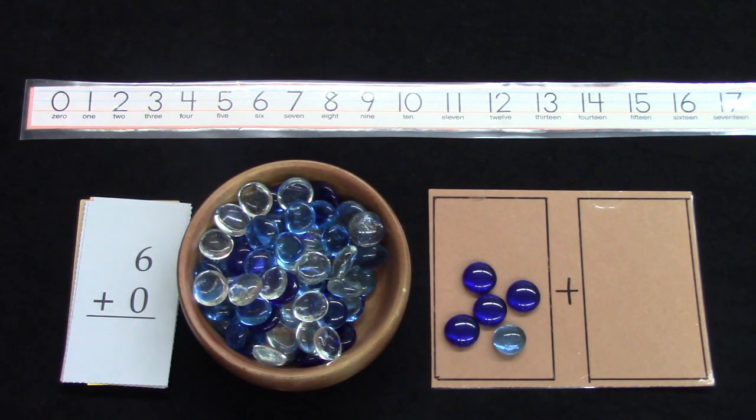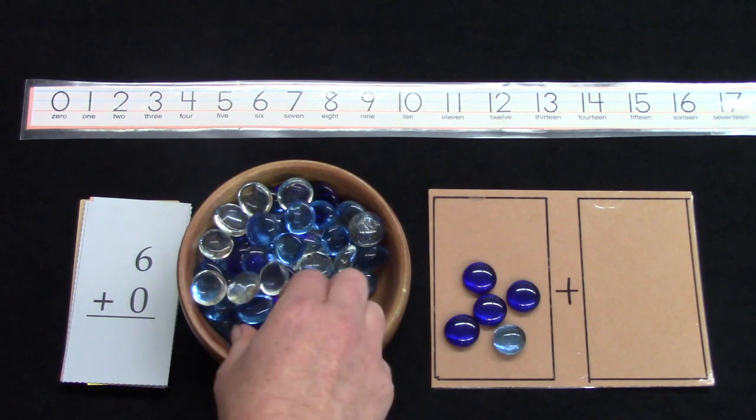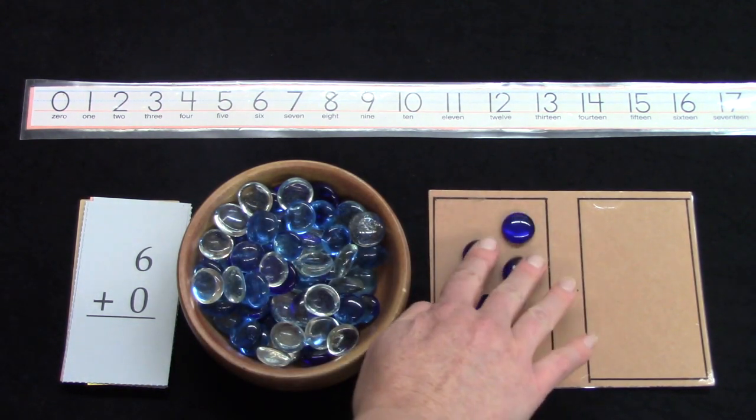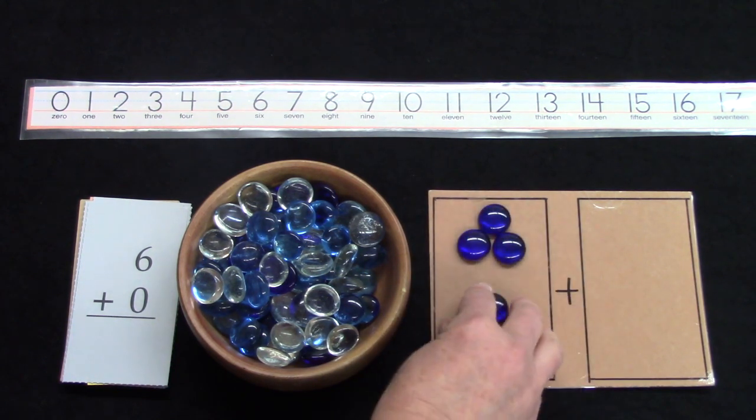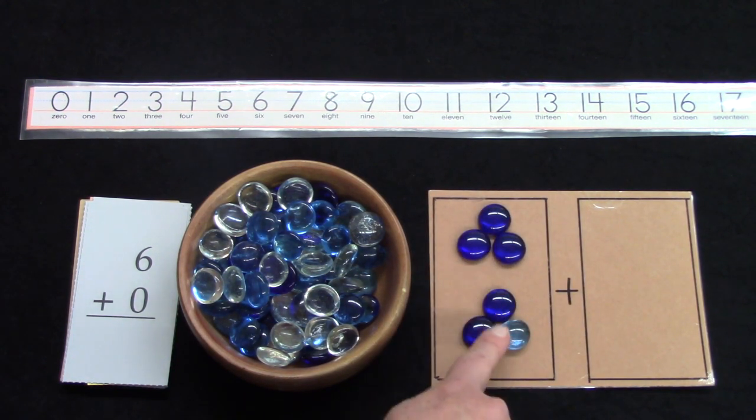In six plus zero, we're going to take another gem and we're going to add it up here. I have one group of three and another group of three. Three plus three is six. So I have six on this side.